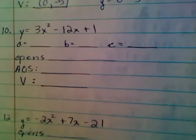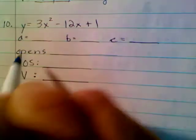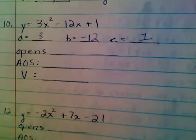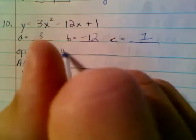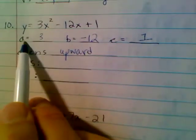Let's look on down at number 10. Although it doesn't directly ask me for an a, b, and c value, I'm going to go ahead and write them out, and then tell which way it opens. It opens upward, because that A value is positive.